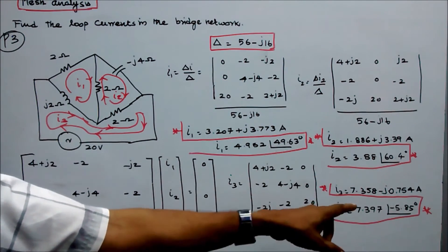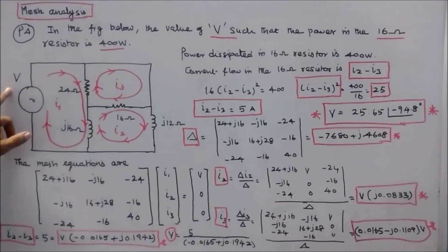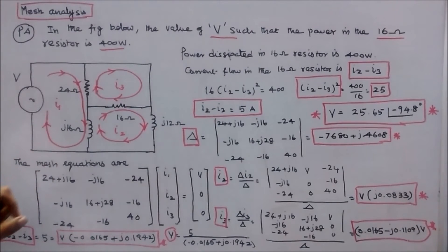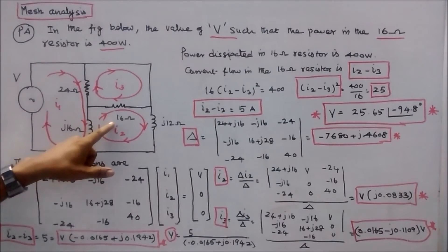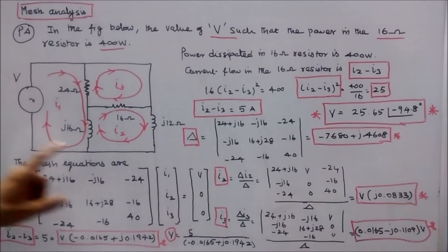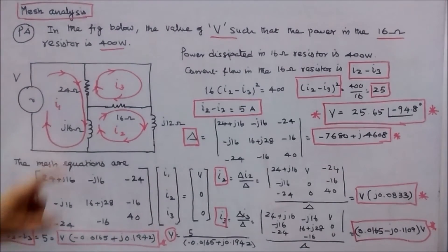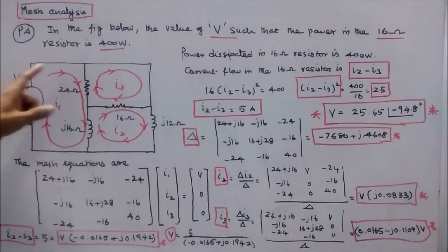Problem number four: In the figure, find the value of V such that the power in the 16 ohm resistor is 400 watts. The circuit consists of two resistors (24 ohms and 16 ohms) and two inductive reactances (j12 ohms and j16 ohms). There are three loops with clockwise loop currents i1, i2, and i3.